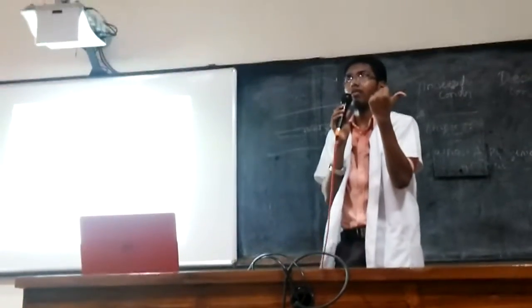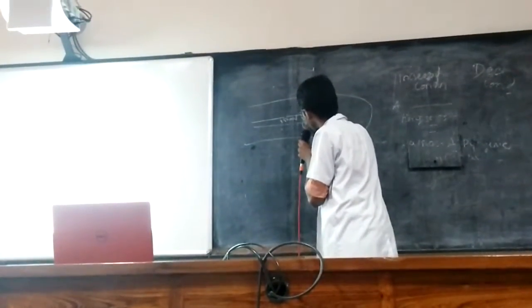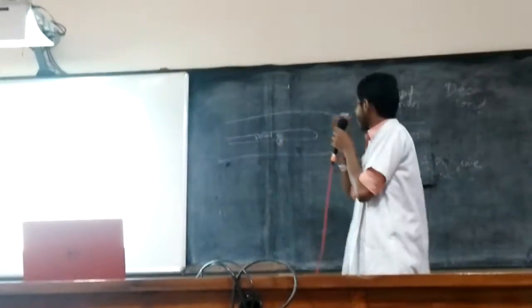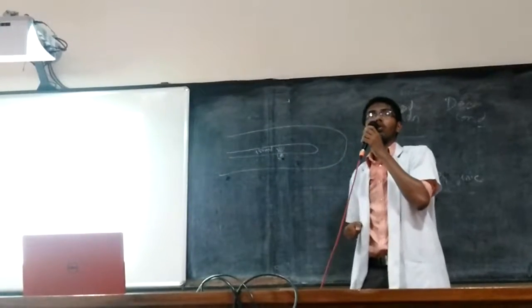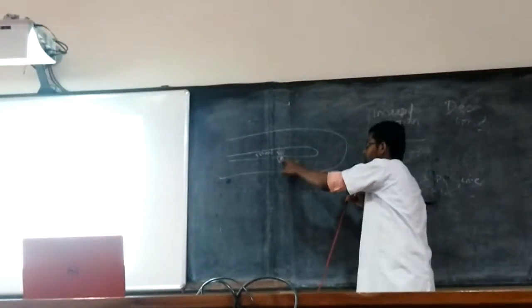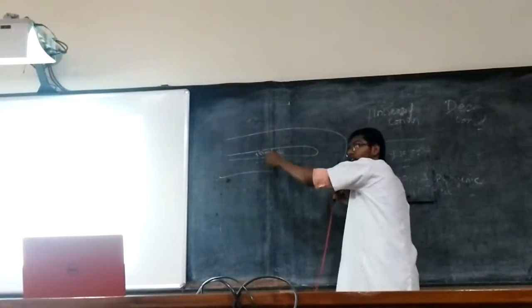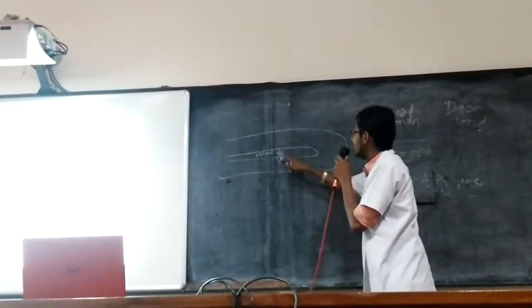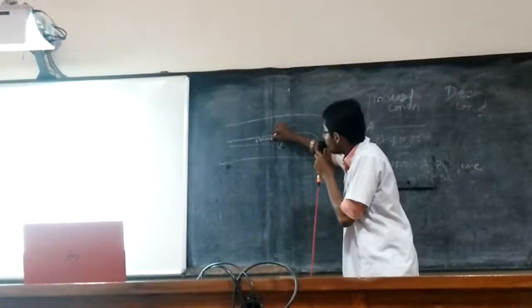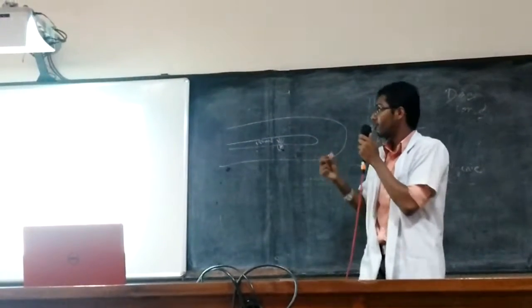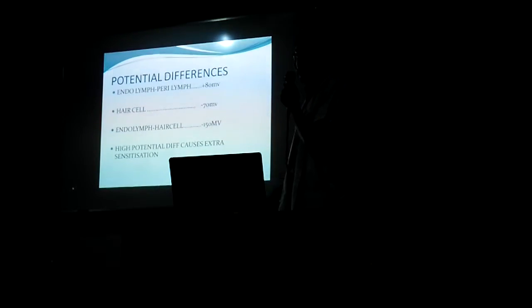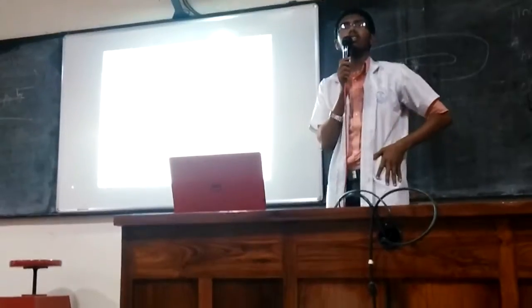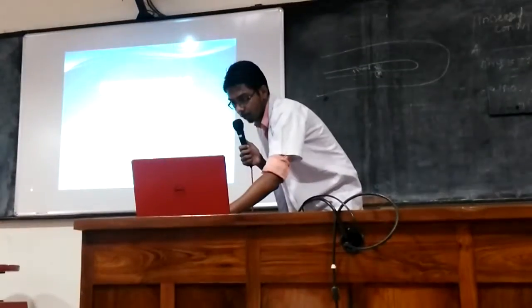Usually cells have inner negativity. This hair cell has a negativity of minus 70mV. So the difference between perilymph and the hair cell is minus 70mV. The endolymph is at +80mV. Therefore the difference between endolymph and the hair cell is 150mV. There is a potential difference of 150mV between the endolymph and the hair cells — this is the endocochlear potential. This high potential difference causes extra sensitization.